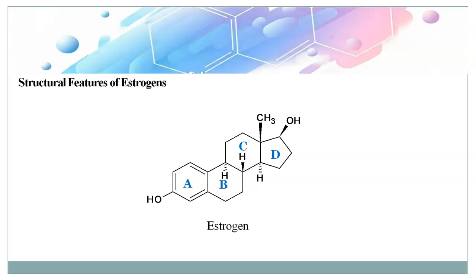Another important structural feature is the aromatic ring. Ring A is aromatic and has a hydroxyl group at the third position. This aromatic ring contributes to potent activity, and its conjugated double bonds make estrogen more soluble in fats and lipids.